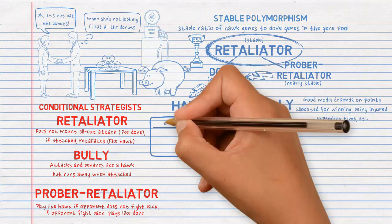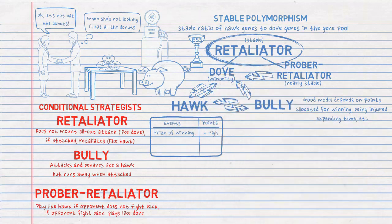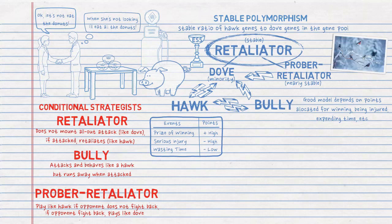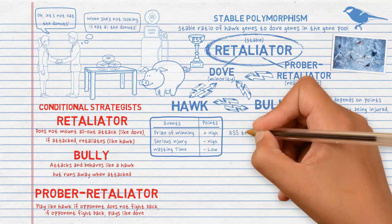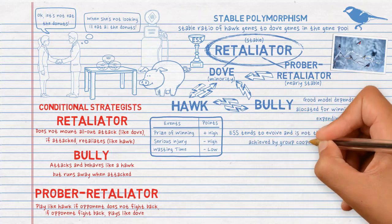For example, in elephant seals, the prize of winning is near monopoly over the harem, and therefore the probability of serious injury would also be high compared to the cost of wasting time, which is small. In cold climates, for a small bird, the cost of wasting time and waiting around is more fatal — or for the Great Tit, a pasturing bird that must catch prey regularly to ensure its nestling survival. The conclusion here is that ESS would tend to evolve, and ESS is not the optimum that could be achieved by group cooperation.